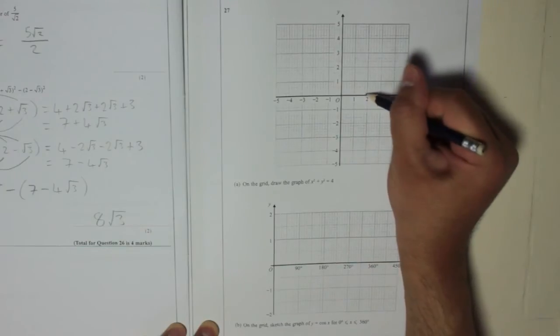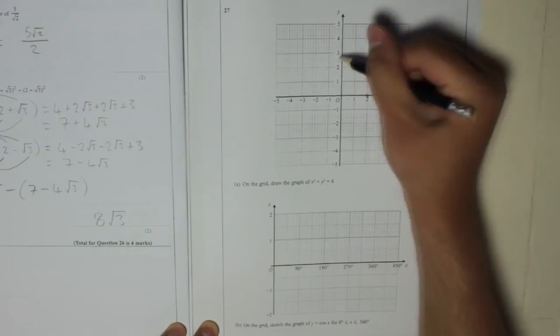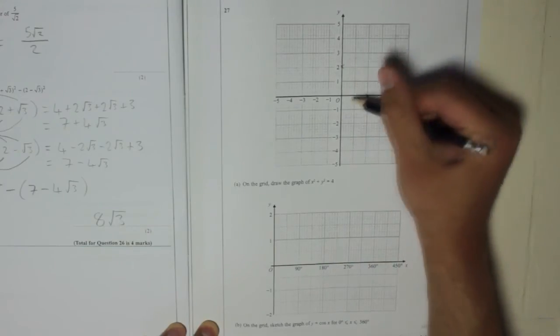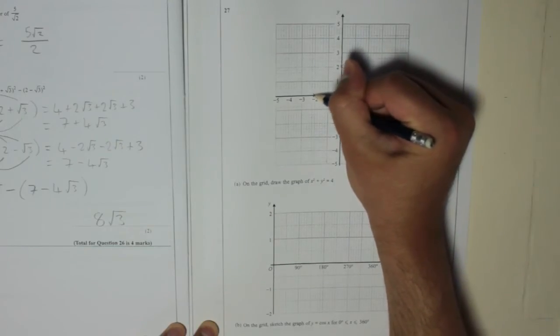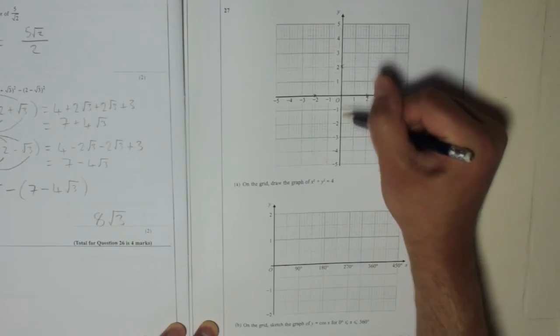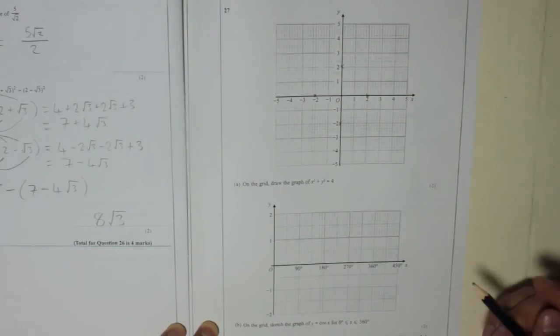If the radius is 2, it's going to go through there. It's going to go through there. So 2 0, 0 2, 0 minus 2, sorry, and 0 minus 2. So that's where our circle's going to go through.